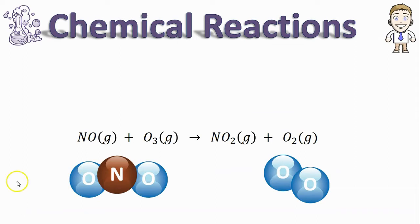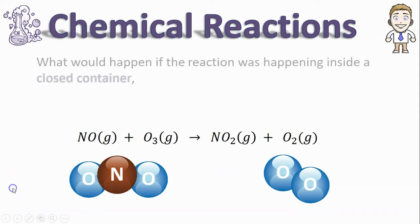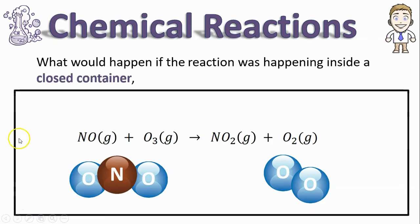This video will go one step further and ask: what would happen if this reaction was taking place inside a closed container? Here this rectangle represents the closed container. Really all this means is that these products that we just made, the NO2 and the O2, can't escape.